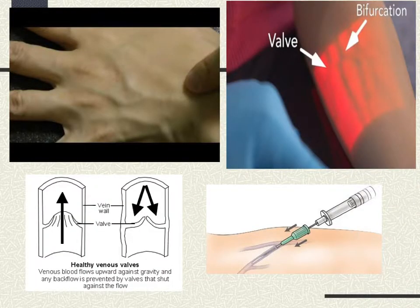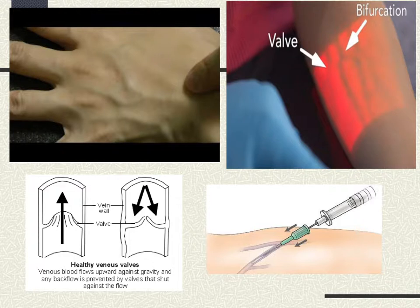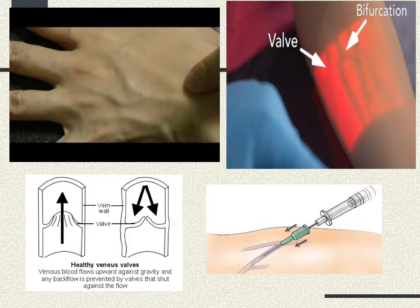Here are graphics of valves and what we want to avoid when starting IVs. The top right picture shows bifurcation valves of the vein using illuminators. The bottom left shows healthy venous valves — that's what they're supposed to look like — so you can see why introducing a needle and then inserting a catheter in those areas can be problematic.